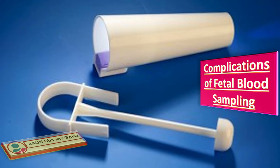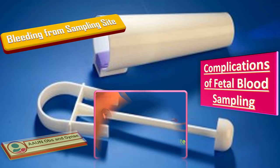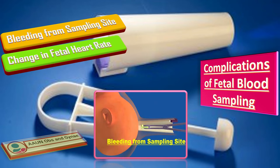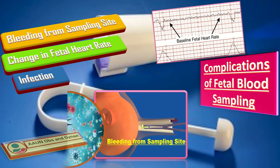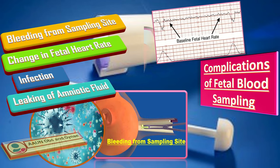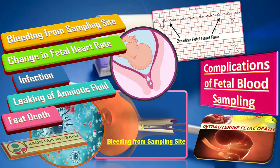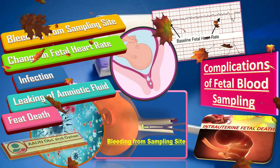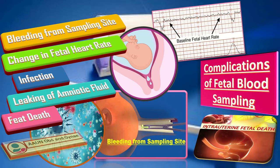What are the complications of fetal blood sampling? The complications include: first, bleeding from the fetal blood sampling site; second, changes in fetal heart rate; third, infection; fourth, leaking of amniotic fluid; and fifth, fetal death can occur in certain extreme situations. That was all about fetal blood sampling — thank you so much.